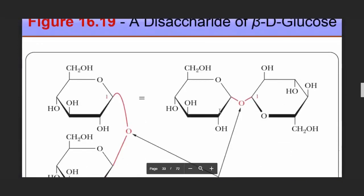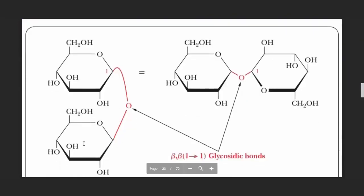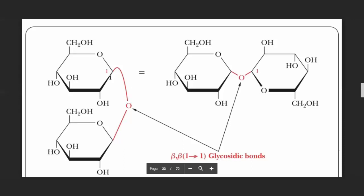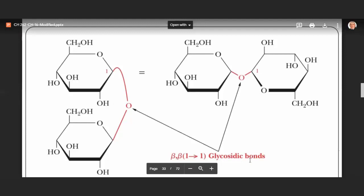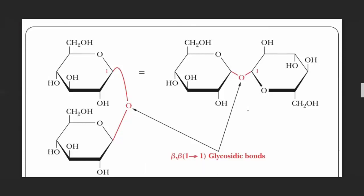Another possibility is a glycosidic bond between two beta-D-glucose molecules: the bond is between carbon 1 of one and carbon 1 of the other, and its type is beta. So it is called a beta-1,1 glycosidic bond. This is because both anomeric carbons are involved, and both are in the beta configuration.